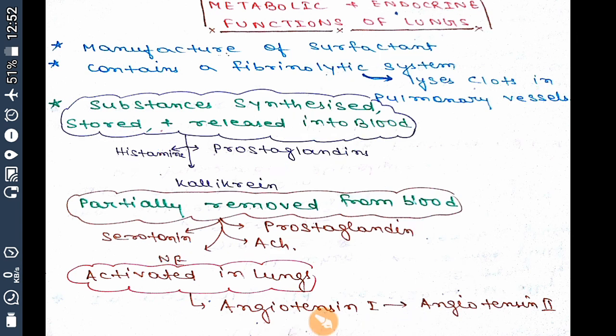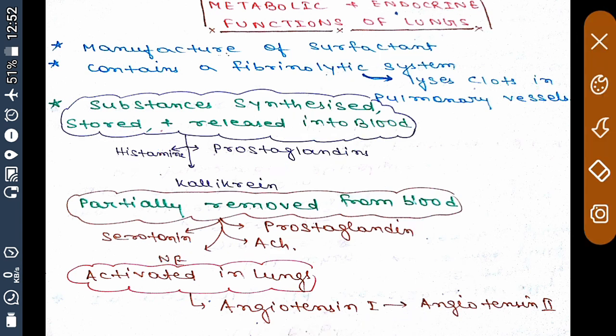In summary, the metabolic and endocrine functions of the lung include: surfactant production, the fibrinolytic system, synthesis of histamine, kallikrein, and prostaglandins, removal of serotonin, norepinephrine, acetylcholine, and prostaglandins from the blood, and the activation of angiotensin 1 to angiotensin 2.